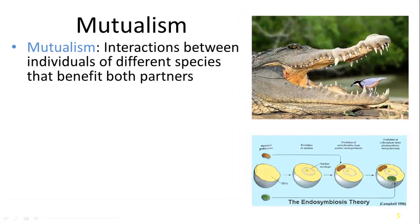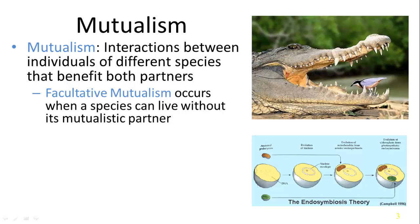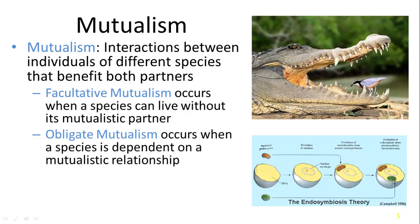Mutualism is an interaction between different species in which both partners benefit — there's a positive association for both. You could have a facultative mutualism where it's not necessary; it's convenient, and there is benefit to both, but it's not necessary for their continual survival. An obligate mutualism, on the other hand, is where they have to have the other one in order to survive — it has a direct relationship with their fitness.